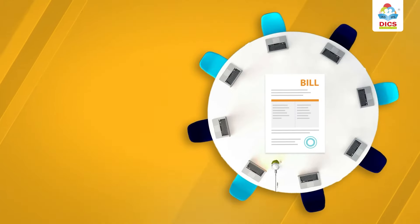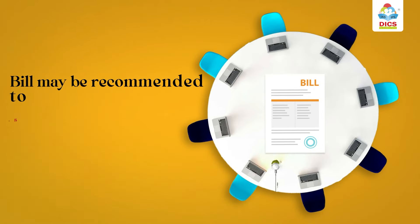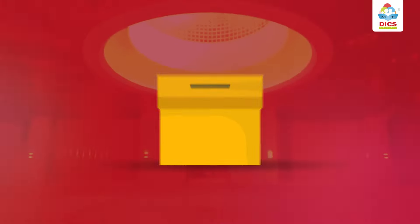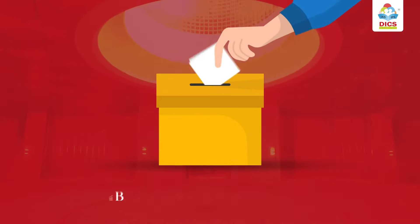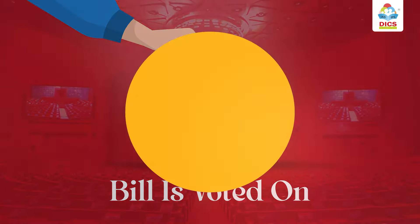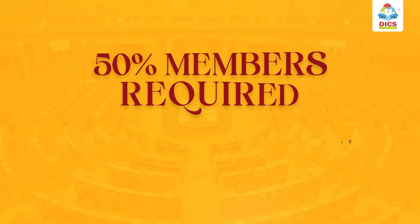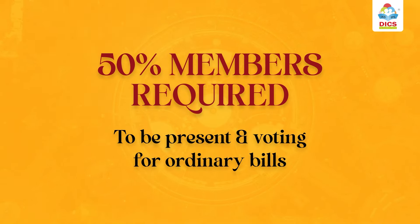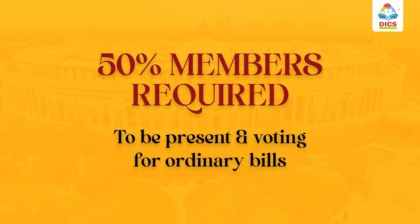If needed, the bill can be recommended to a select committee or a joint committee. After that, the bill is set up for voting. For ordinary bills, more than 50% of members are required to be present and voting in both the houses.